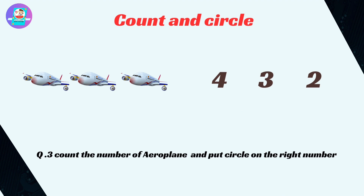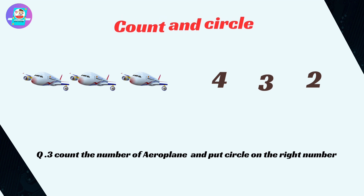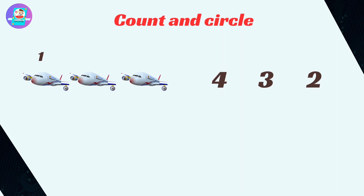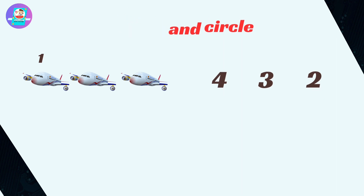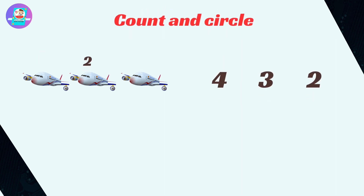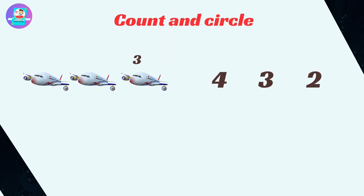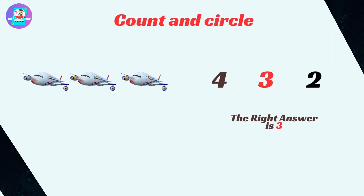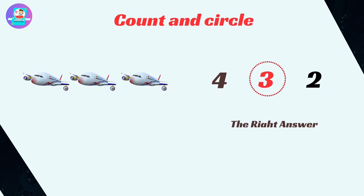Okay next. Count the number of aeroplane and put circle on the right number. Let's count the number of aeroplane here. 1, 2, 3. Here the number of aeroplane is 3, then 3 will be the correct answer. So circle on 3 which is correct answer.